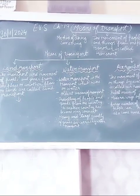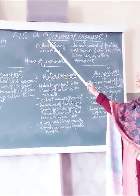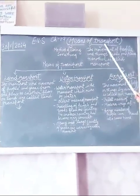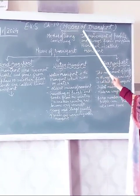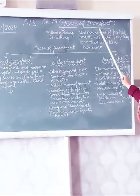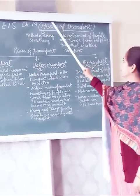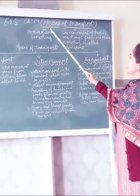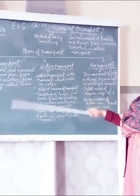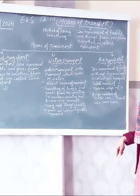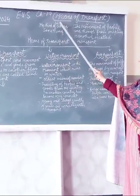Today I am going to teach you EBS chapter number 19 - Means of Transport. Let me first describe the meaning of 'means'. Means means method of doing something. When we want to do something, the method by which we are doing the things is known as means.